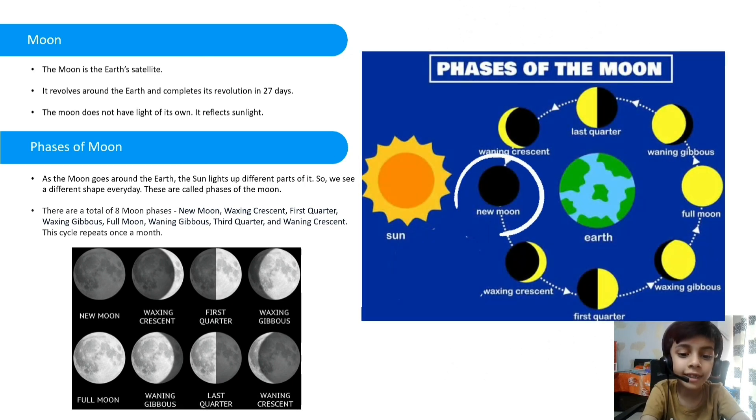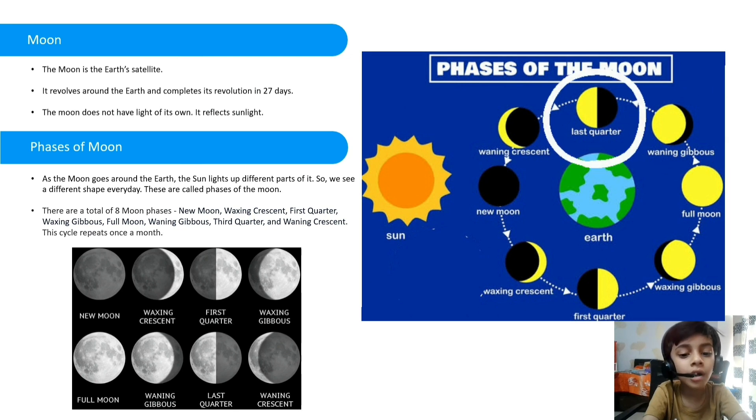There are total eight moon phases: new moon, waxing crescent, first quarter, waxing gibbous, full moon, waning gibbous, third quarter, and waning crescent. This cycle repeats once a month.